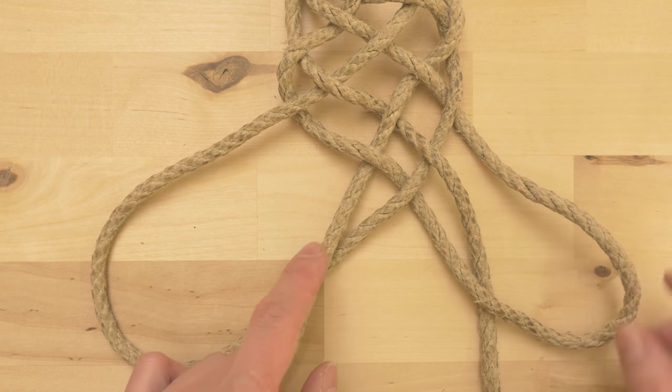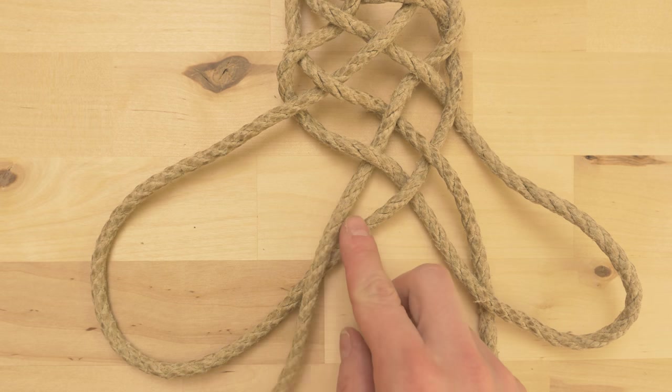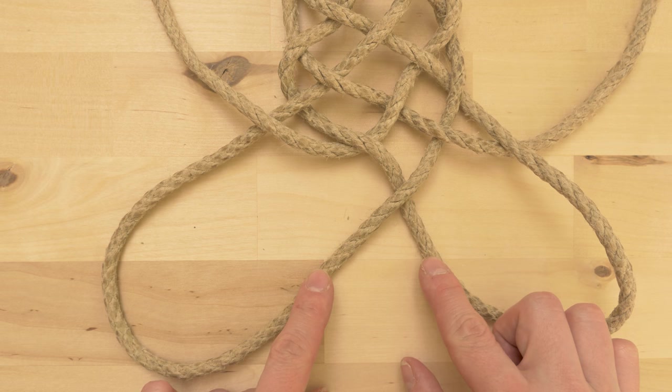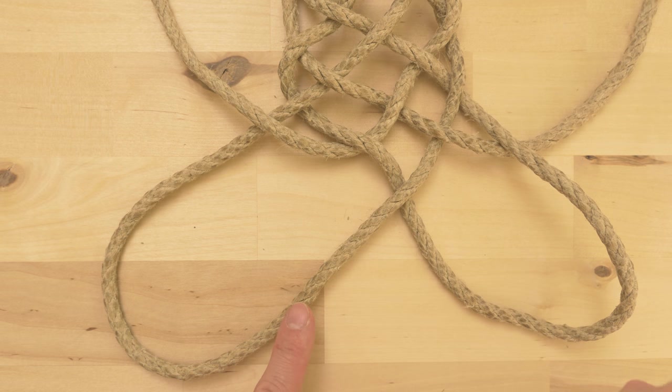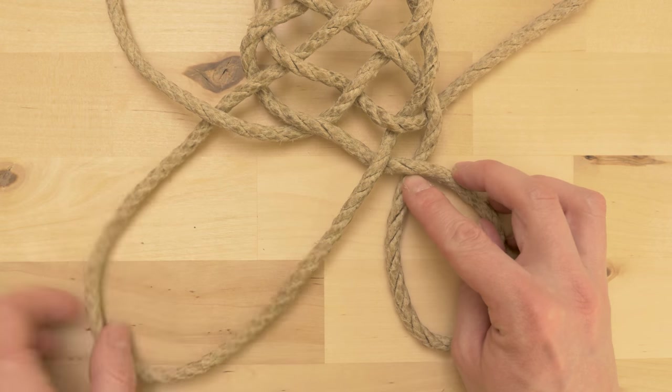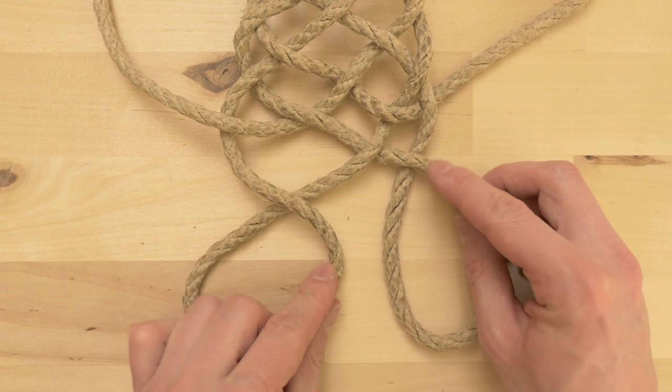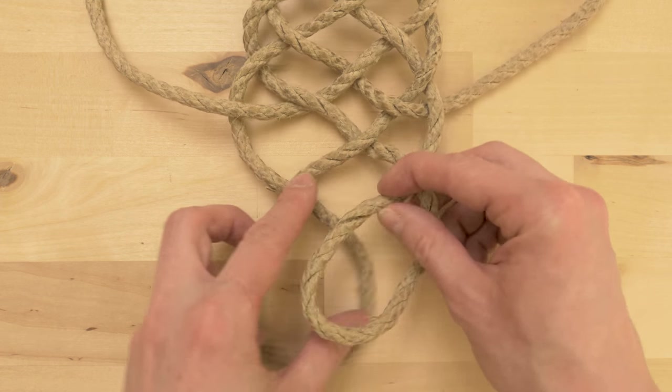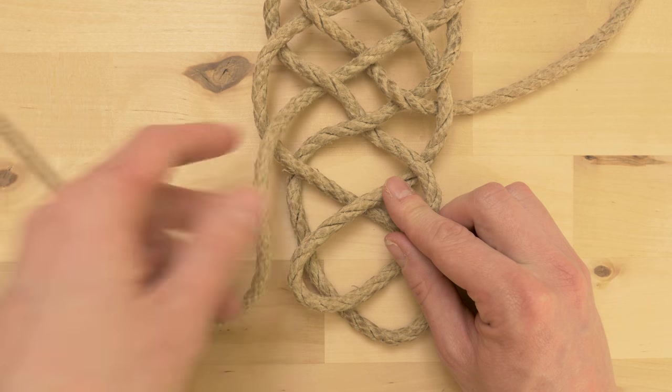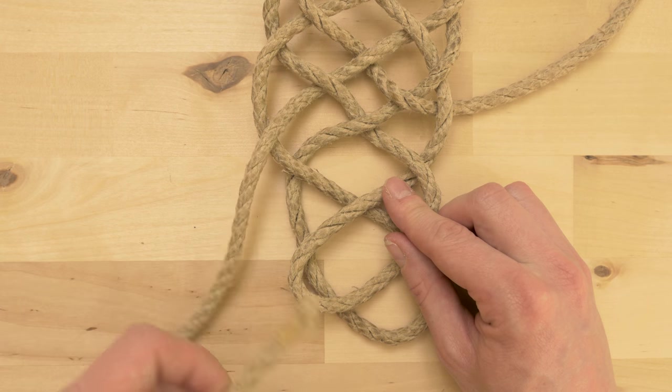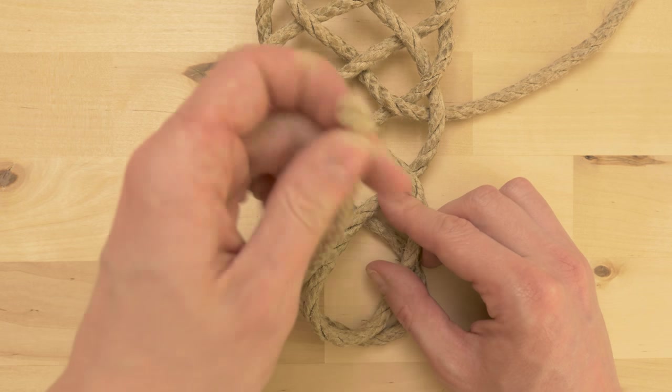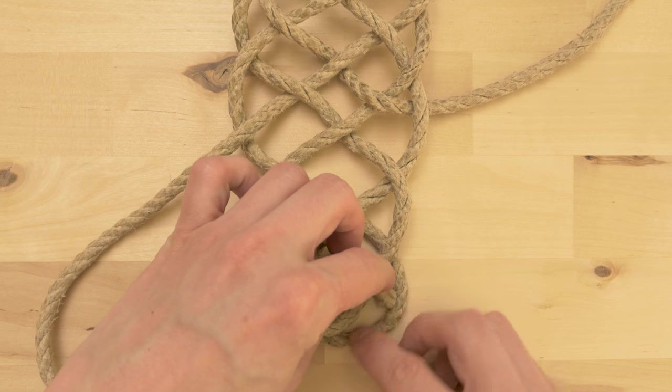We're now going to move our working ends out of the way, then twist these two bottom parts, which we just enlarged, towards the right side. Place your right end over your left end, then with your left end, the working end that is, weave through, starting with an under, then over two, and under one.